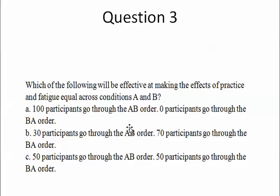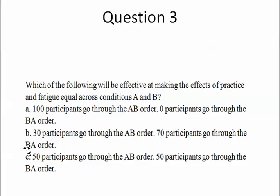What if 30 participants go through the A-B order and 70 participants go through the B-A order? Well, 30 participants are experiencing practice and fatigue in condition B, and 70 participants are experiencing practice and fatigue in condition A. Which means that a larger number of participants are having practice and fatigue in condition A, so the practice and fatigue is not equal across the two conditions in this case.